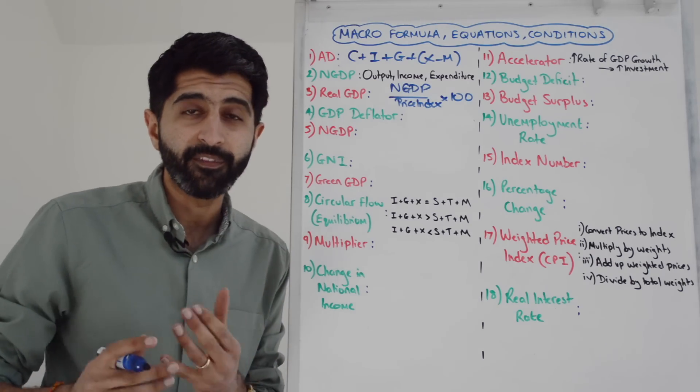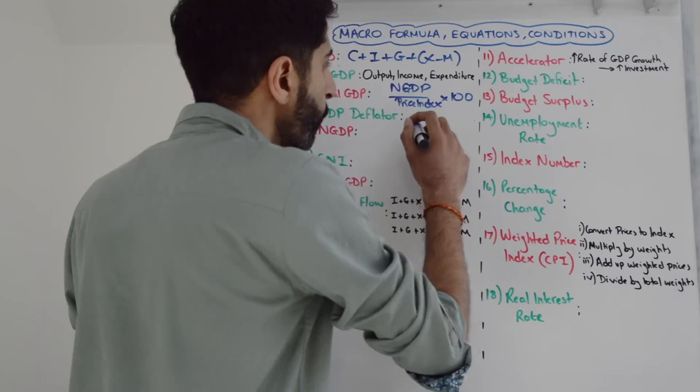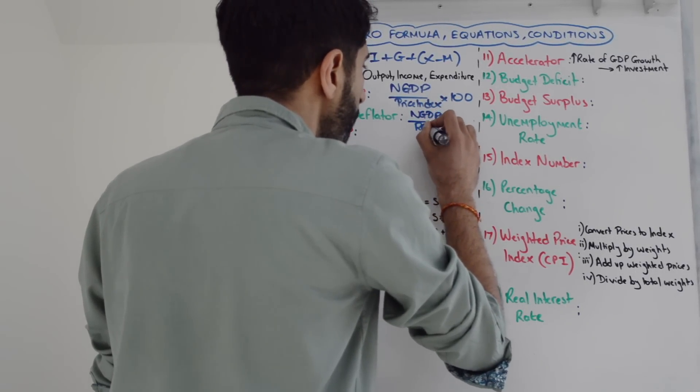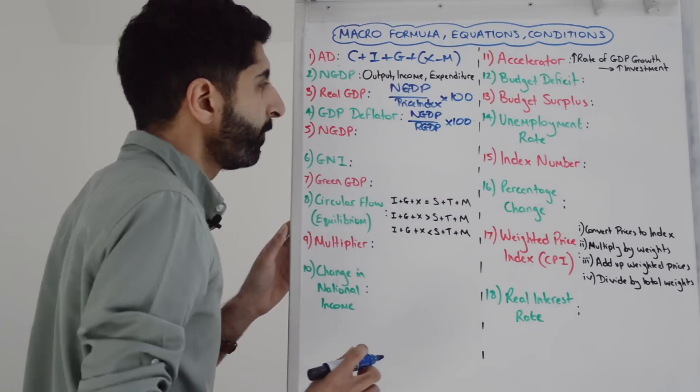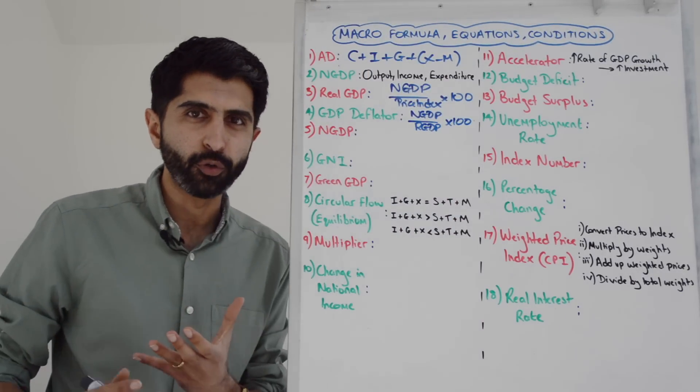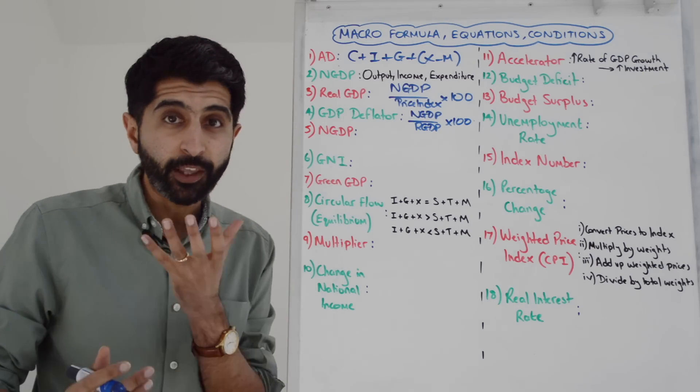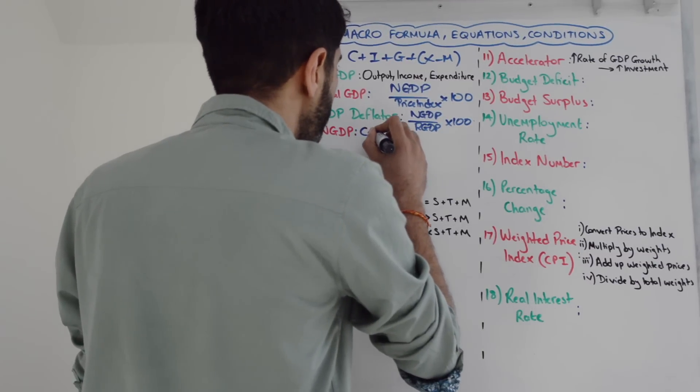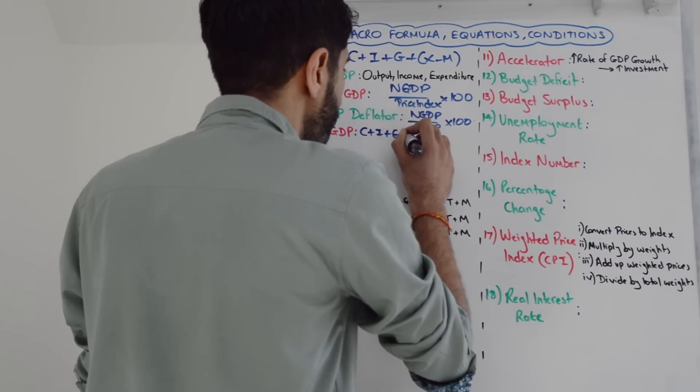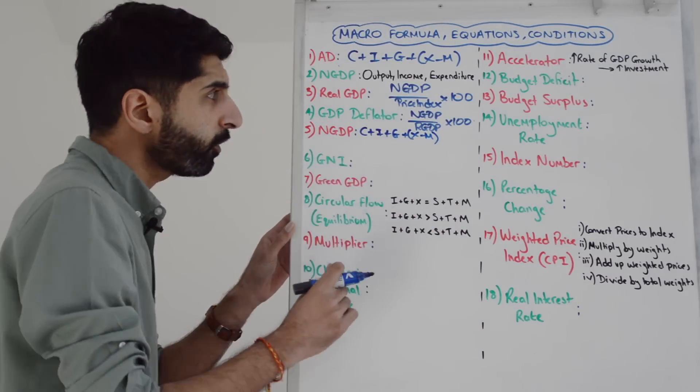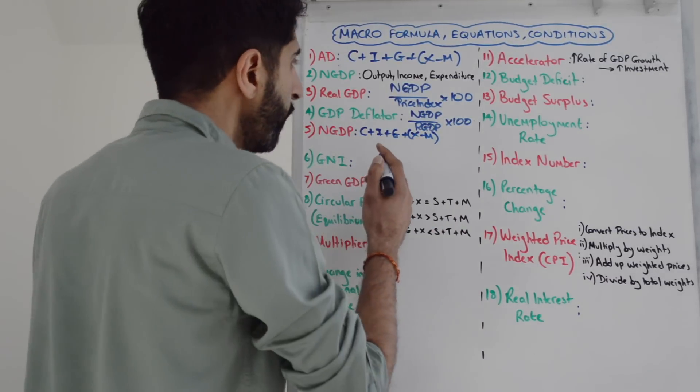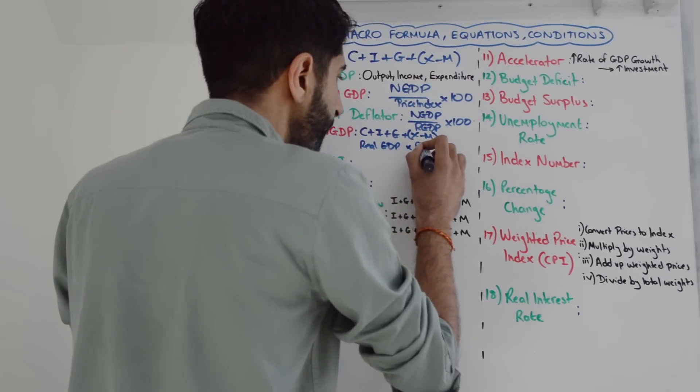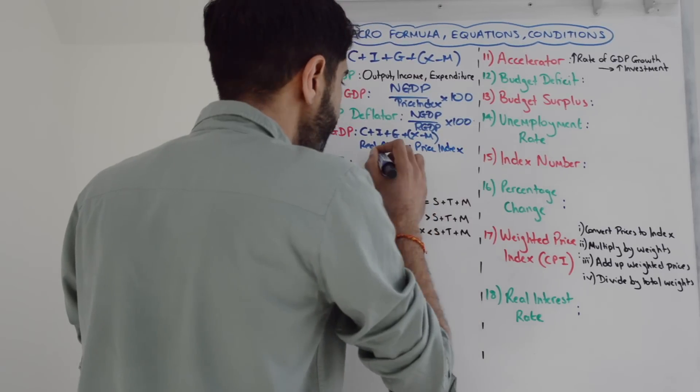If you need to learn the GDP deflator, here is the equation: it's nominal GDP divided by real GDP multiplied by 100. To calculate nominal GDP, we can use the expenditure method - that's just AD: C plus I plus G plus X minus M. But also we can rearrange: nominal GDP is simply real GDP multiplied by a price index, then divide all of that by 100.